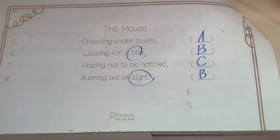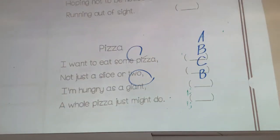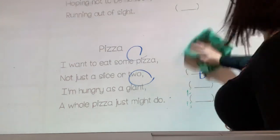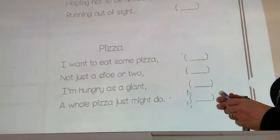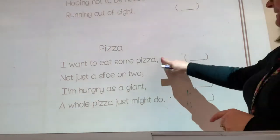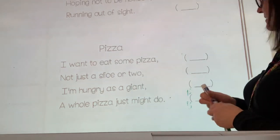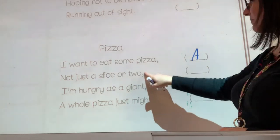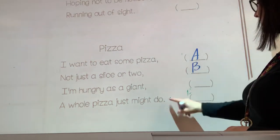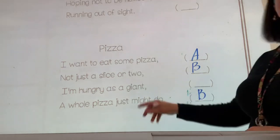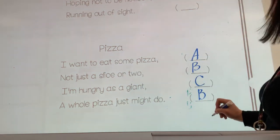Let's take a look at the rhyme scheme for the poem Pizza. I want to eat some pizza, not just a slice or two. I'm as hungry as a giant — a whole pizza just might do. So the last words are: pizza, two, giant, do. Pizza is A, two rhymes with do so that's B, giant gets C, and do is B. The rhyme scheme is A, B, C, B — just like The Mouse.